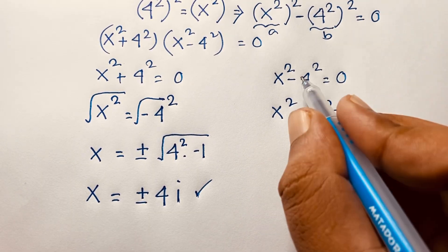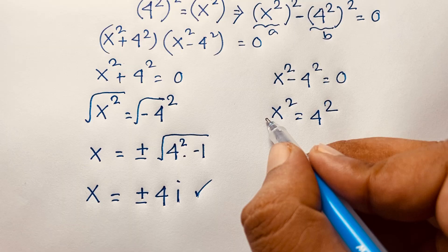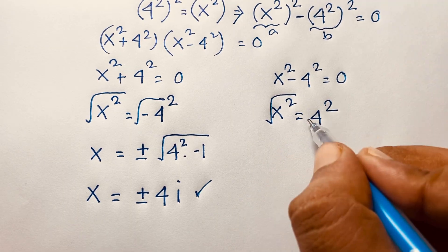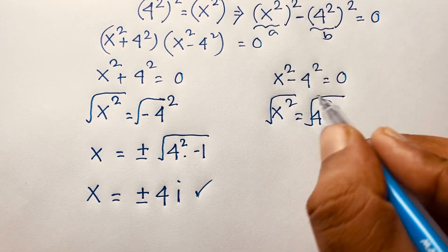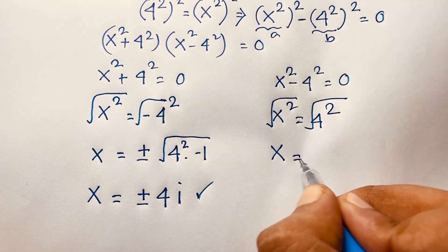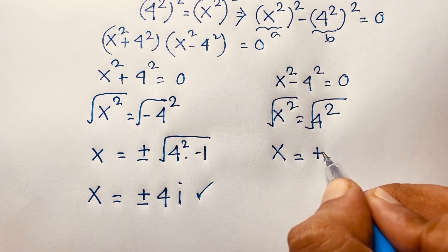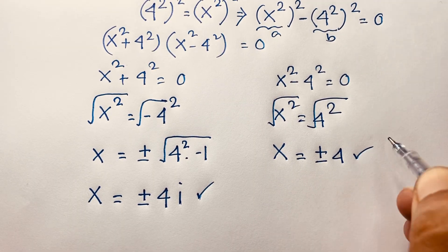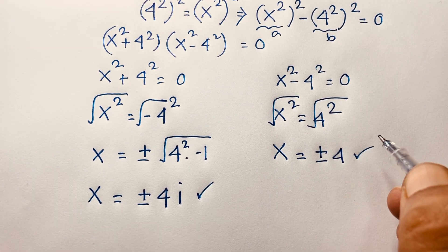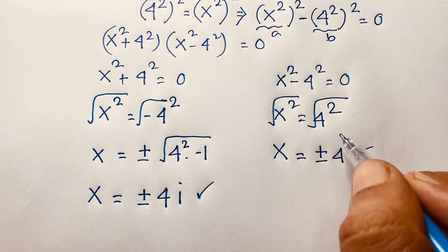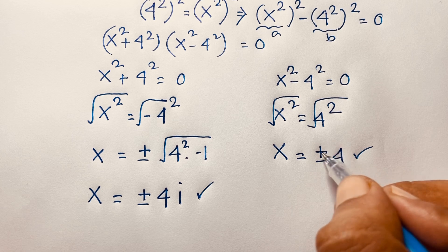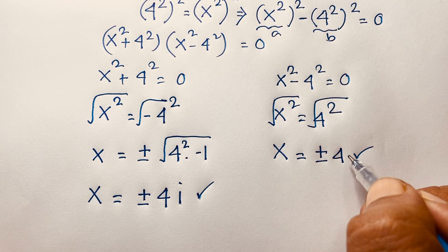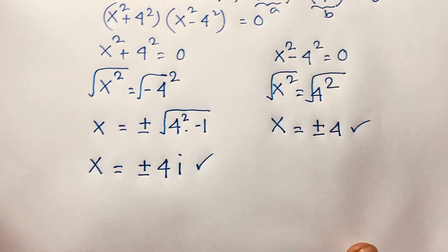For case two, x squared equals 4 squared. Moving 4 squared to this side and taking the square root of both sides, the square root cancels and we get x equals plus or minus 4. So our final real solution is x equals plus or minus 4.